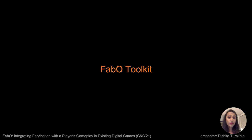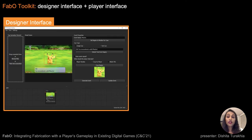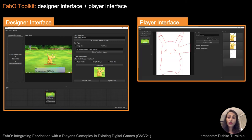We implemented this framework in the FABO toolkit that has two parts: a designer interface used by designers to tag visual cues in the gameplay to integrate fabrication, and the player interface used by players to monitor their gameplay, detect the tagged visual cues, and auto-generate the fabrication files from game objects.